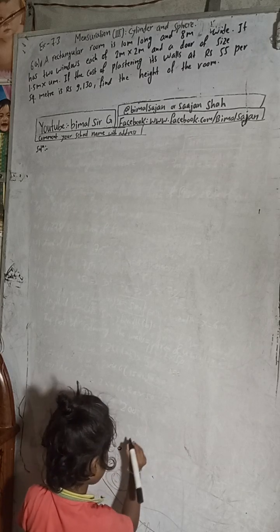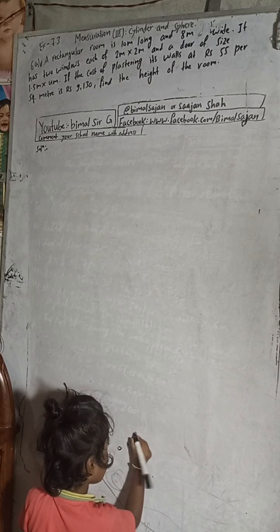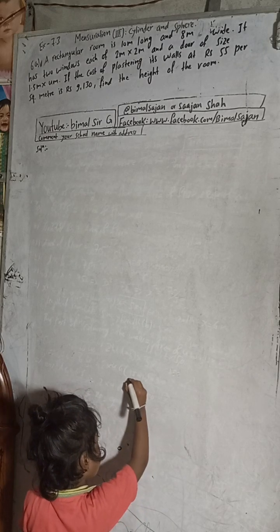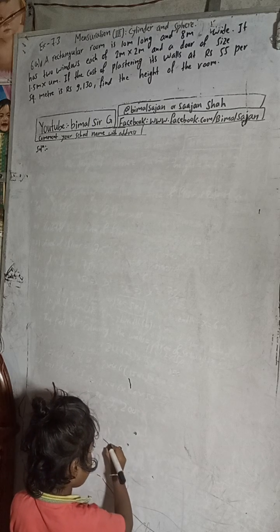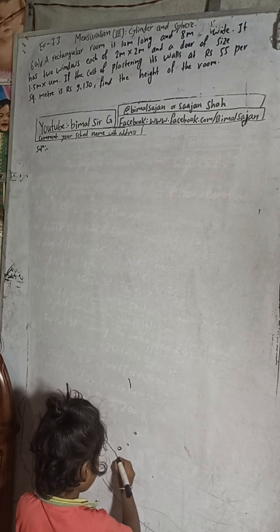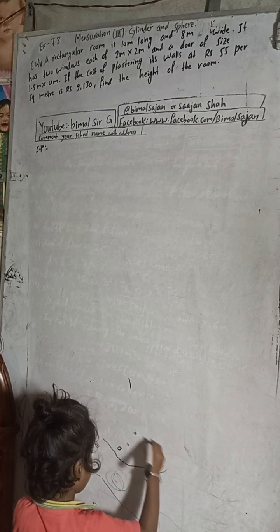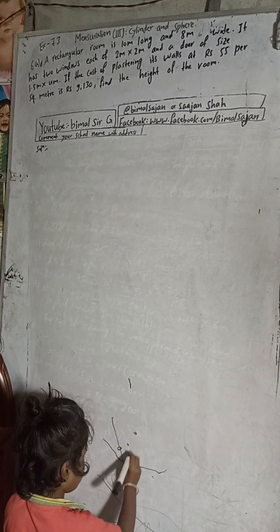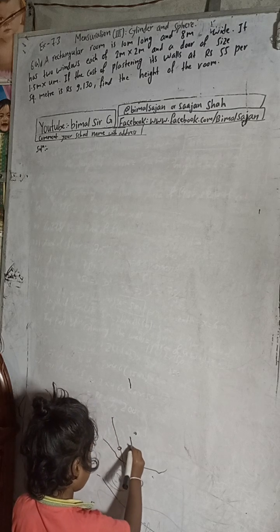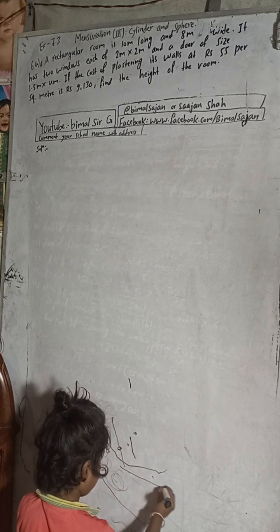Hi class 9 and 10 students, welcome back to Vimal Surjee YouTube channel. This is question number 6a, Exercise 7.3, Mensuration 3rd part — Cylinder and Sphere, Compulsory Maths class 9.